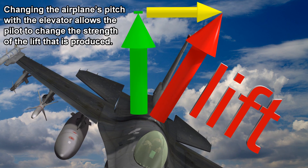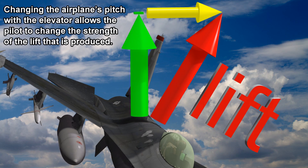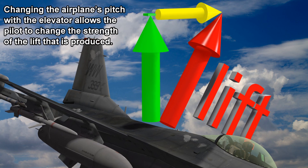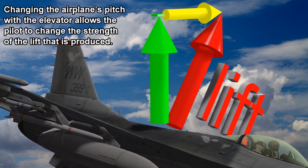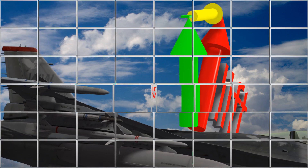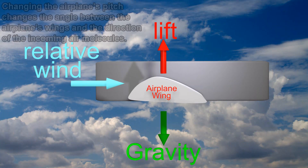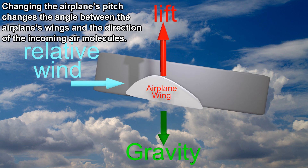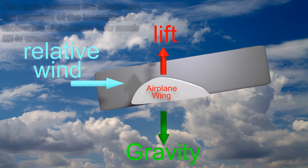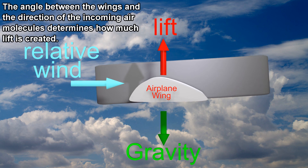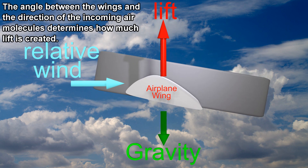Changing the airplane's pitch with the elevator allows the pilot to change the strength of the lift that is produced. Changing the airplane's pitch changes the angle between the airplane's wings and the direction of the incoming air molecules. This angle determines how much lift is created.